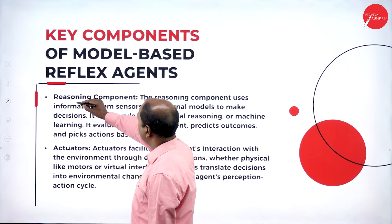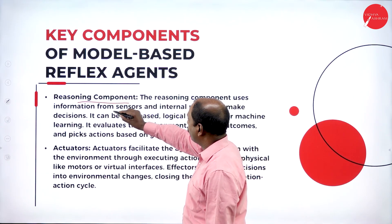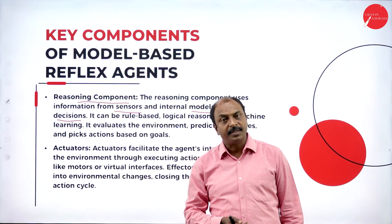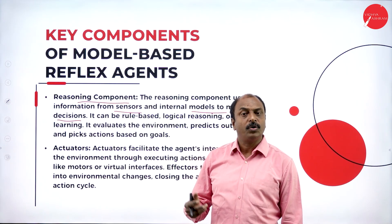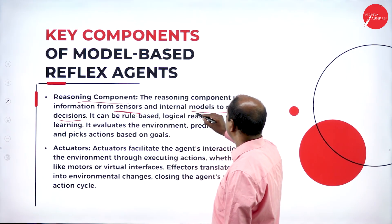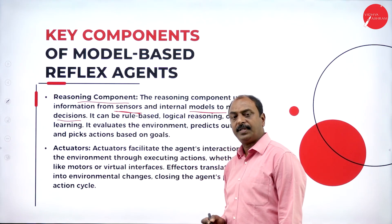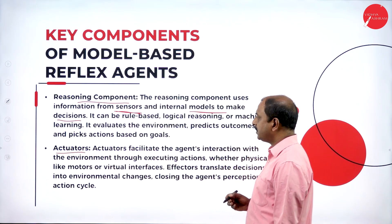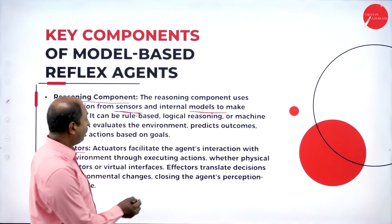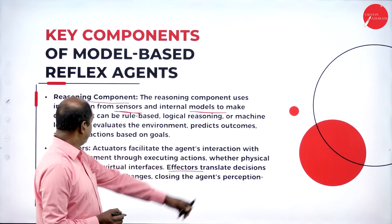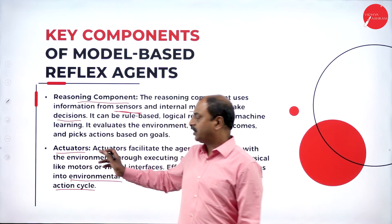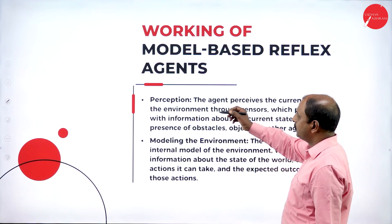The next component is reasoning. It uses information from the sensors and internal models to make decisions. If you compare this with the simplest reflex agent, the simplest reflex agent works with current percepts only, but this model based reflex agent works with both current percepts as well as the internal model. Next is actuators — these are the effectors that translate decisions into environmental changes, closing the agent perception cycle. In the next slide we will see how this model works.